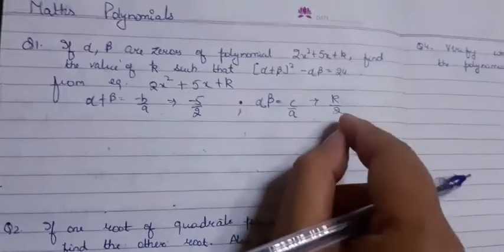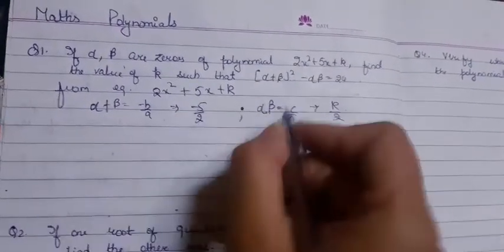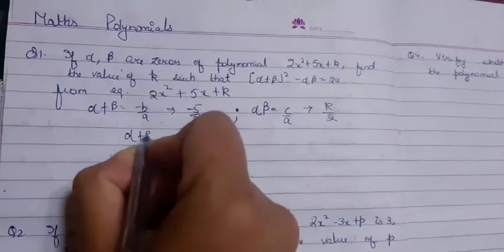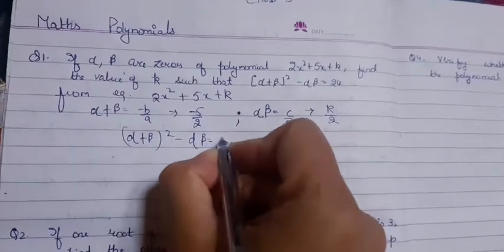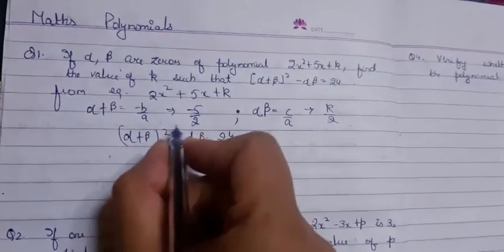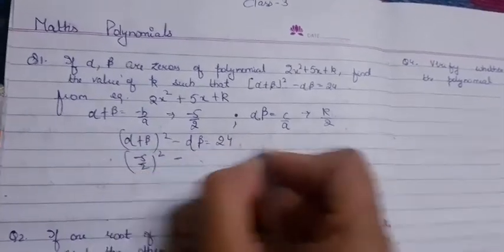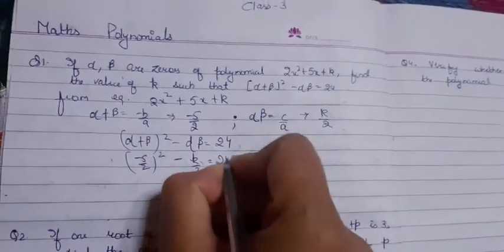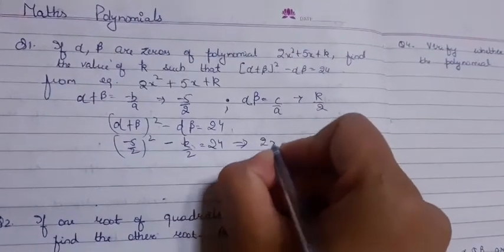In values we will put (α + β)² - αβ = 24. So (α + β)² minus α·β = 24. This gives us (-5/2)² - k/2 = 24. That's 25/4 - k/2 = 24.